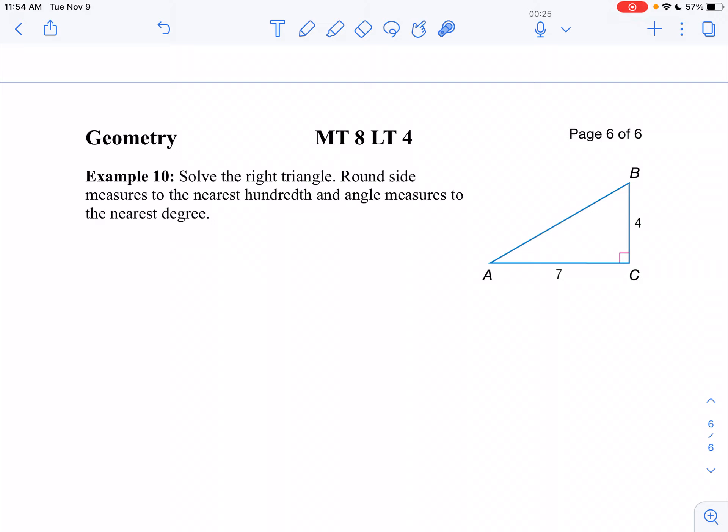When it says solve, what that means is we're going to find out everything that's missing. In other words, I know my two legs are seven and four. I want to find the hypotenuse and I want to find the angles A and B because I don't know those.